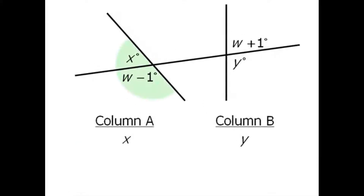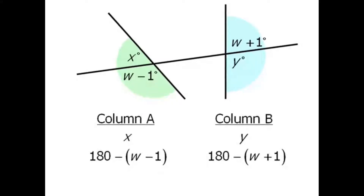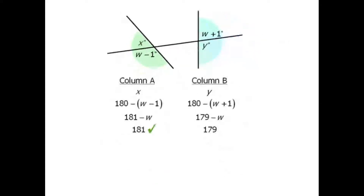Let's begin with these two angles. Since these two angles are on a line, they must add to 180 degrees. So angle x equals 180 minus w minus 1. Similarly, y equals 180 minus the angle w plus 1. Simplifying both columns and adding w to both columns, since 181 is greater than 179, our answer must be A.